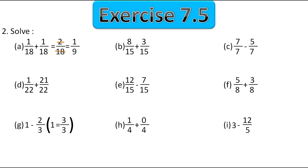In the second one we have 15 as the denominator, so we keep it as it is and add the numerators: 8 plus 3 gives 11 upon 15. This fraction is already in simplest form because 11 and 15 share no common factor, so it remains as it is. In the third one the denominator is again the same, so 7 stays as it is. 7 minus 5 gives 2 upon 7. This fraction is also in simplest form, so it remains as it is.